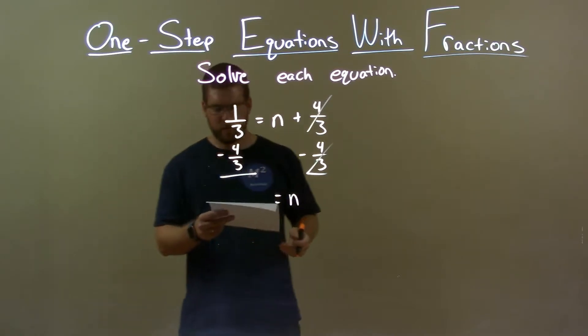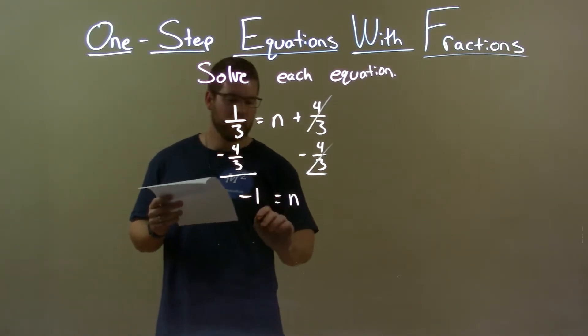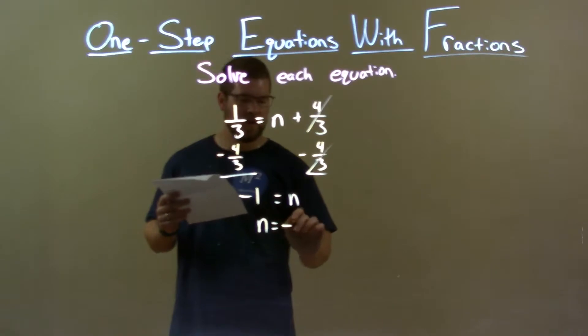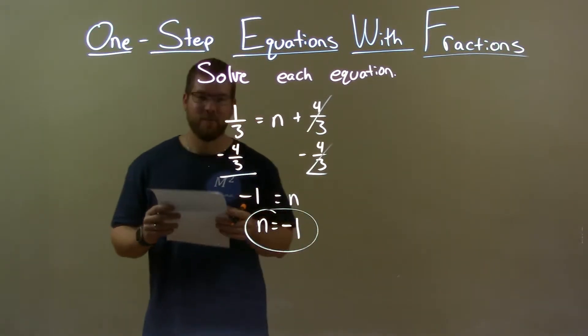Now, one-third minus four-thirds is just negative one. Now, we can rewrite this as n comes first, so n equals negative one is our final answer.